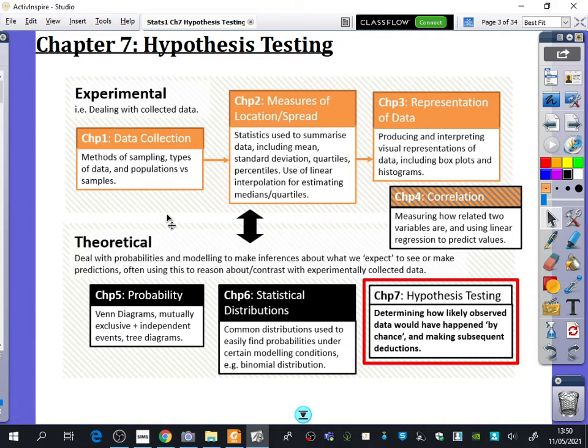This is what all the statistics has looked like so far. That was chapter one, two, three. This is what we've been looking at, the theoretical bit. We've been looking at probability, statistical distributions, and now we're on to the last bit, which is the hypothesis testing. And what hypothesis testing is, is determining how likely observed data would have happened by chance and making subsequent deductions. And I will explain exactly what that means as we go through this.